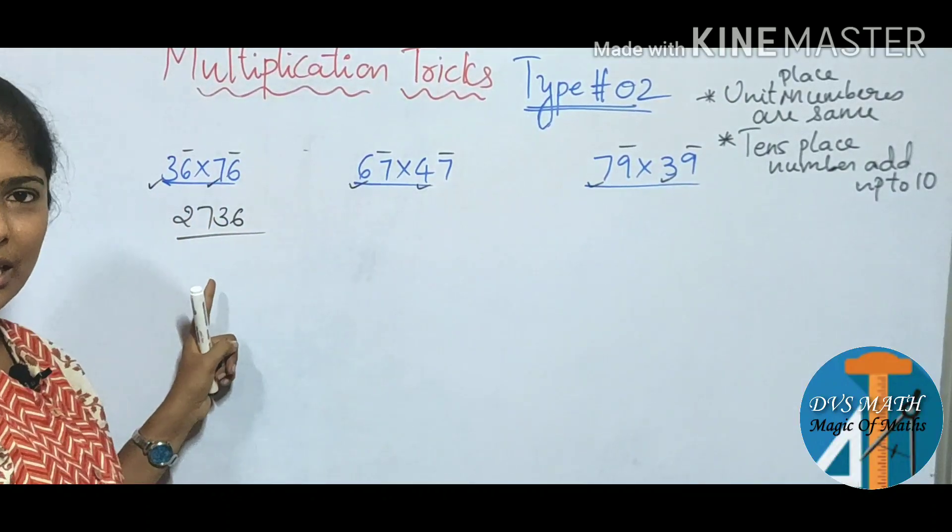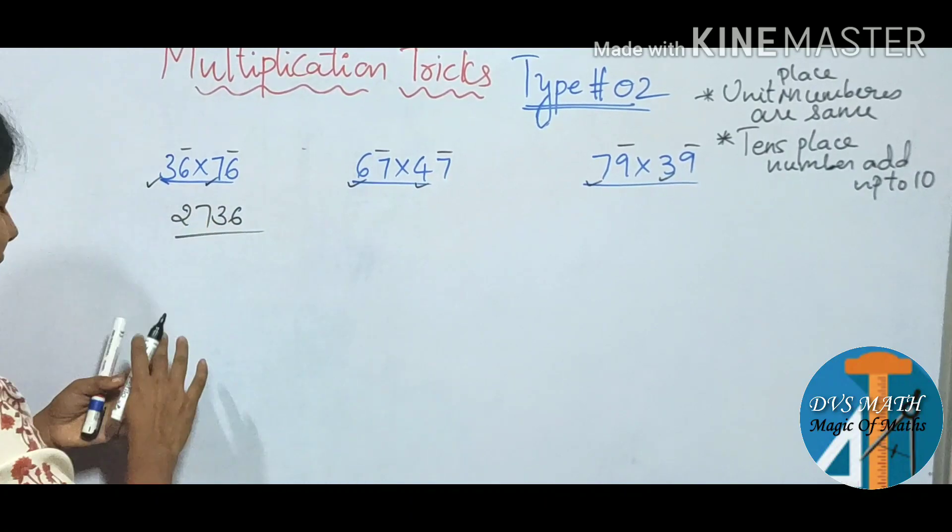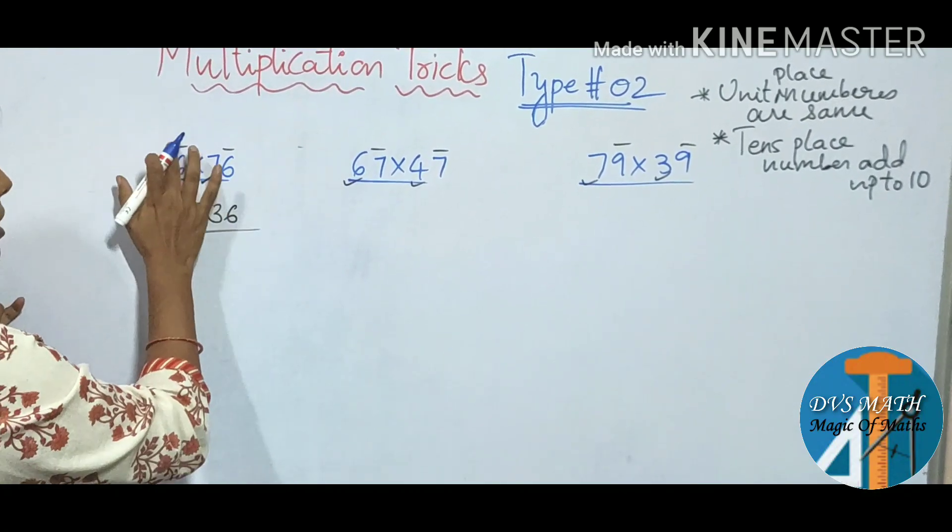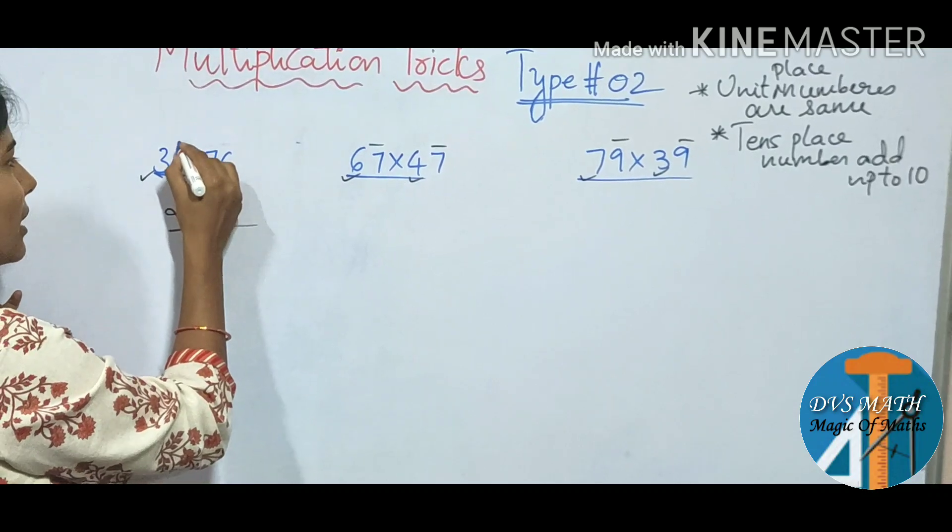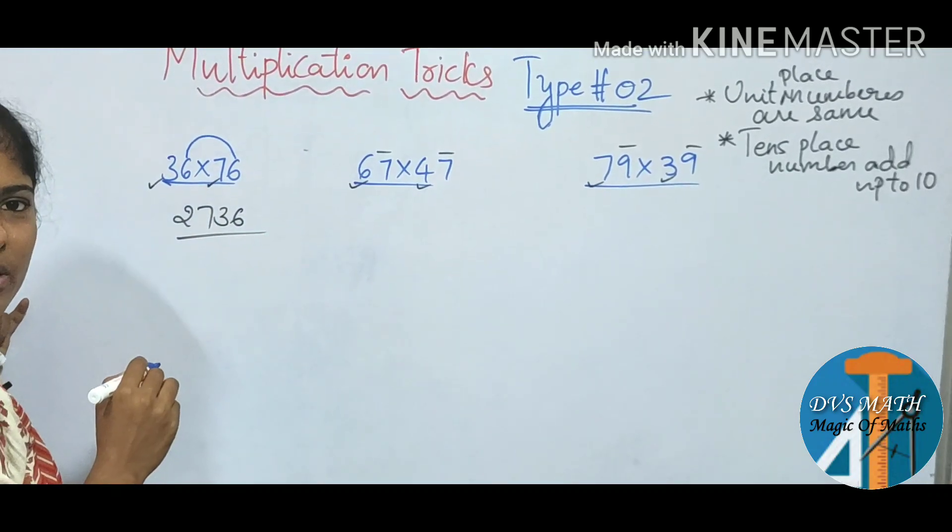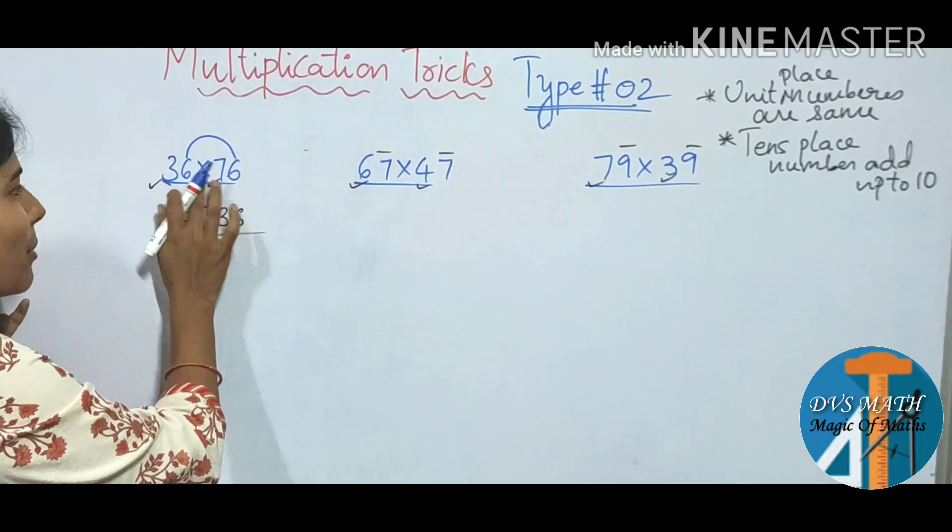Keep this rule, apply this trick now. So how does this trick apply? I will explain this first. The same numbers in the unit places, so you multiply the numbers.